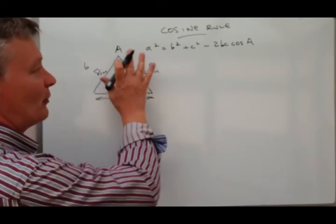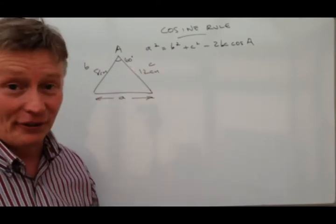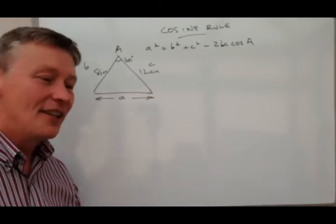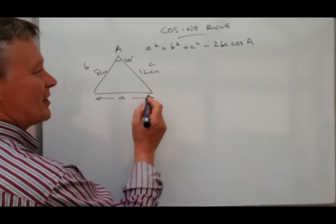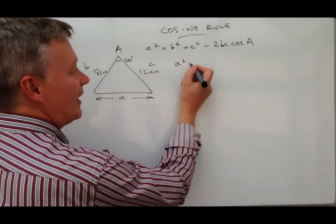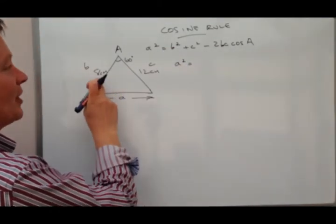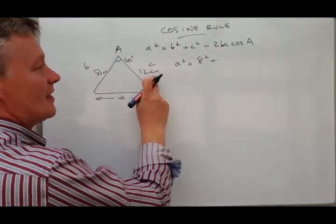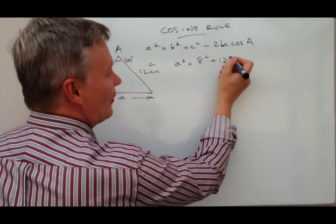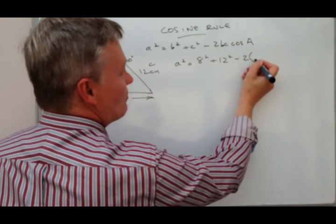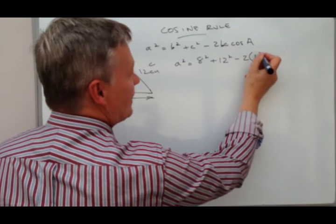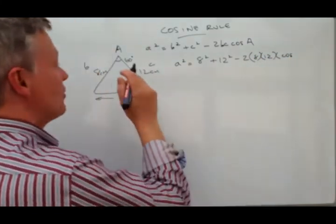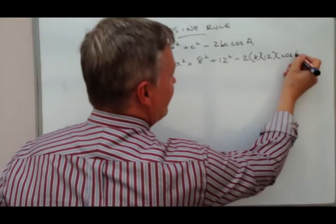So if I was calculating this, and I haven't done, but if you'd like to calculate it then put the answer underneath in the comments, that would be really appreciated. I would say it would be A squared equals B squared which is 8 squared, so that's 8 squared plus C squared which is 12 squared minus 2 times B which is 8 and C which is 12, and that's going to be multiplied by the cosine of 60 degrees.